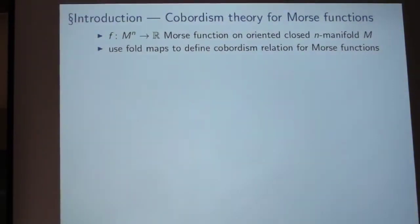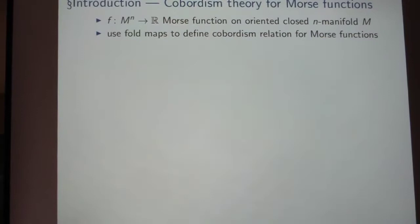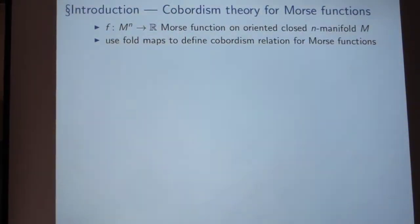So let's consider the Morse function f on a closed-oriented n-manifold m. The manifolds will be supposed to be smooth, differentiable of class C-infinity throughout my talk, and maps will also be considered to be differentiable. And our goal is to define a cobordism relation for such Morse functions by using the theory of fold maps, which comes in naturally, as you will see in a moment.